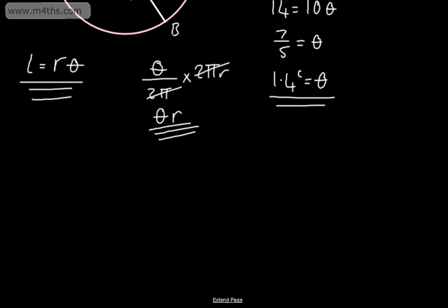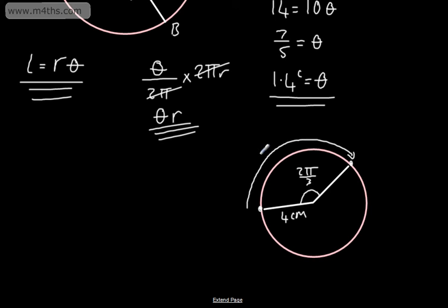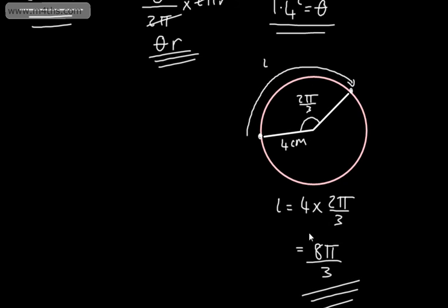Let's look at a nice straightforward example. Drawing a circle with an angle of 2π/3 and a radius of 4 centimetres, we want to find the minor arc length L. That's simply the radius times the angle: 4 multiplied by 2π/3, which gives 8π/3. We can leave that as an exact value in centimetres, or give it to three significant figures as a decimal.